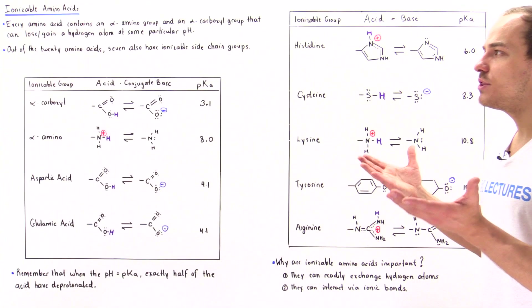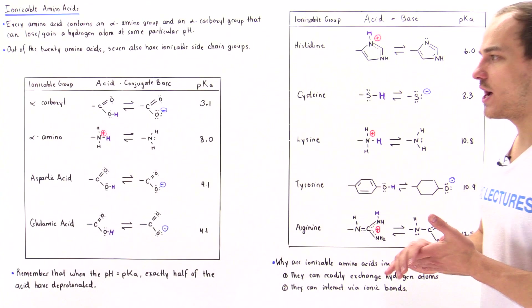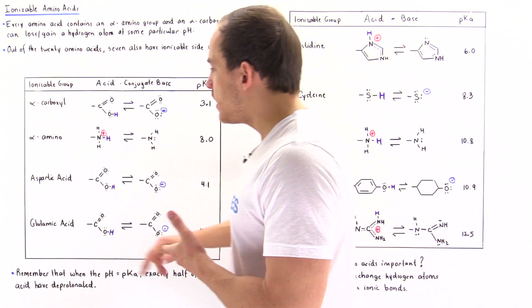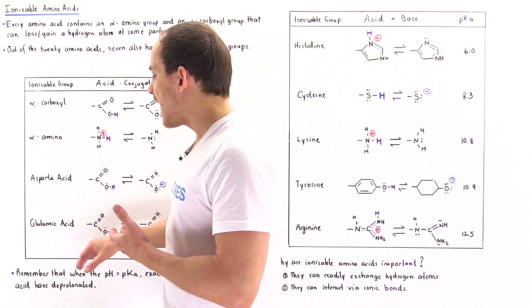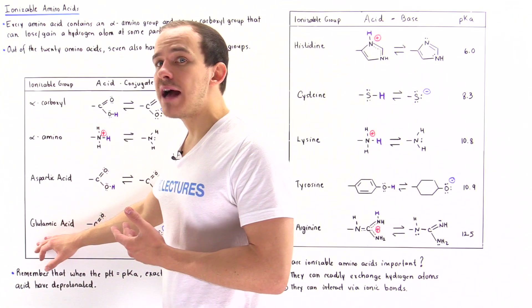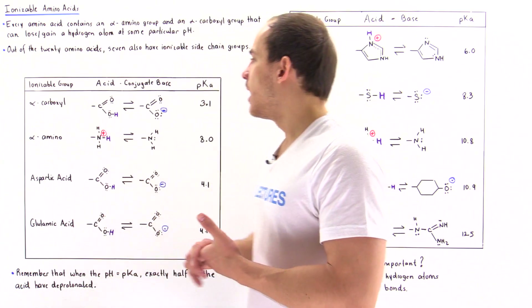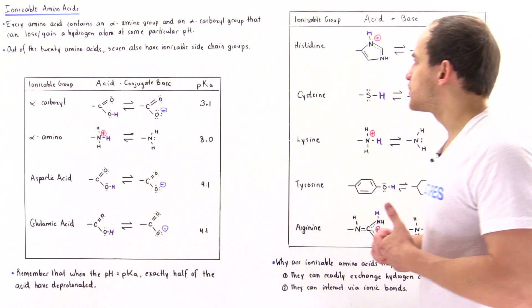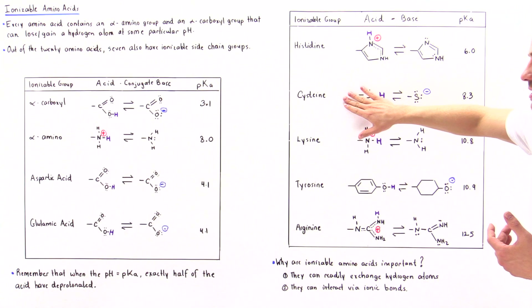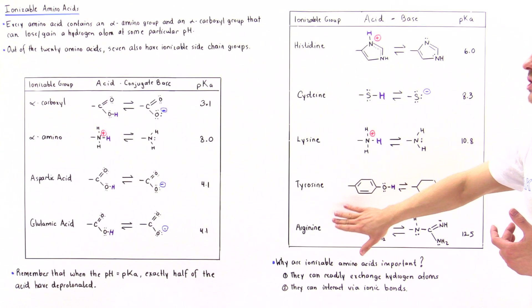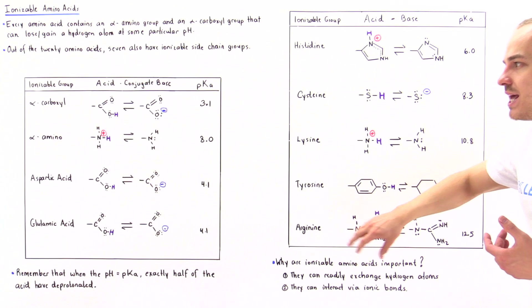So what are these seven amino acids? We have aspartic acid and glutamic acid, our two acidic amino acids. And the rest are histidine, cysteine, lysine, tyrosine, and arginine.